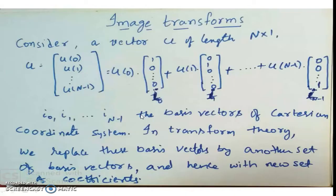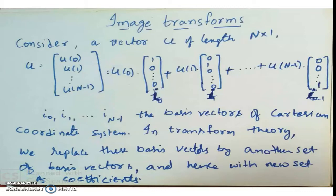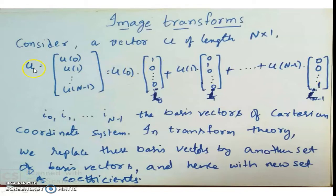We will move on to the transforms. What we are going to do: we are going to see first the one-dimensional case and then extend it to the two-dimensional case using the separability property. Let us consider a one-dimensional signal which is represented as a vector u of length N by 1. u equals [u(0), u(1), ..., u(N-1)]. This is like u(0) multiplied with [1,0,0,...,0], u(1) multiplied with [0,1,0,...,0], and these are nothing but i0, i1, ..., i(N-1): the columns of the identity matrix.